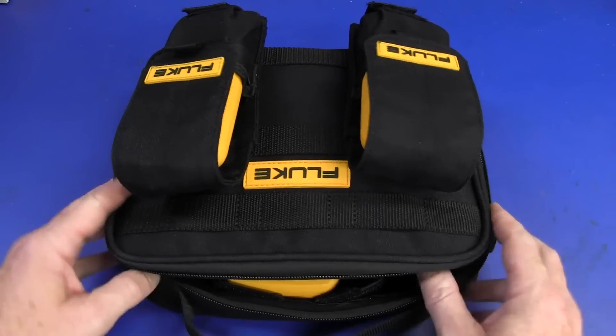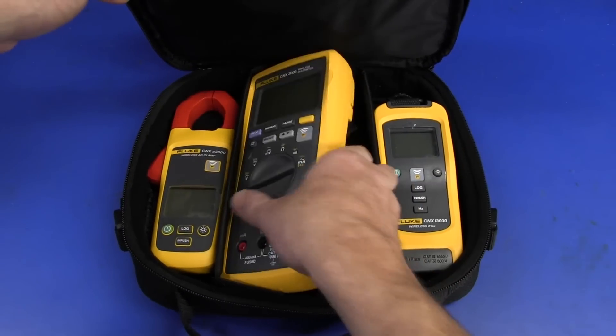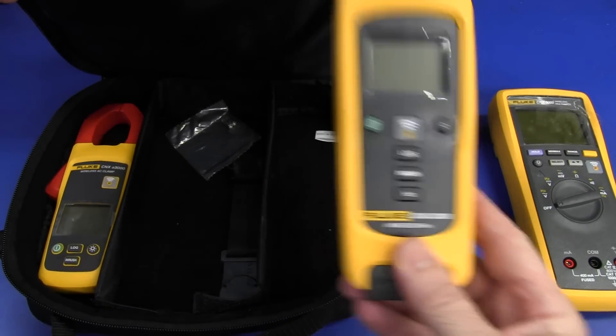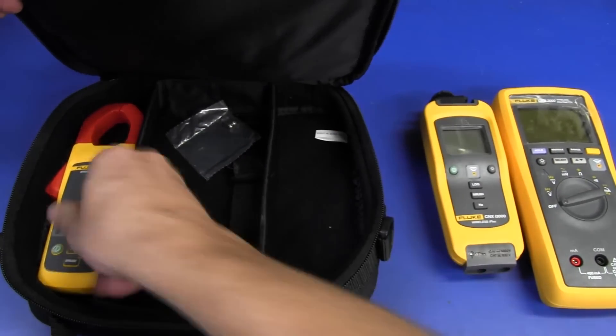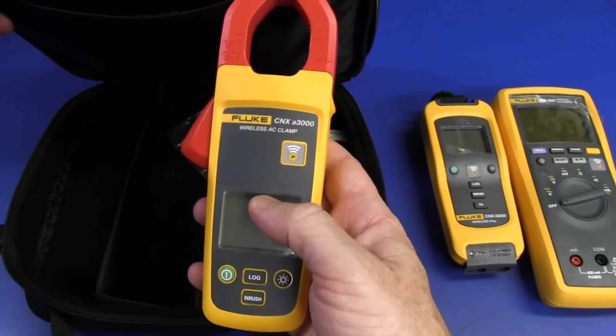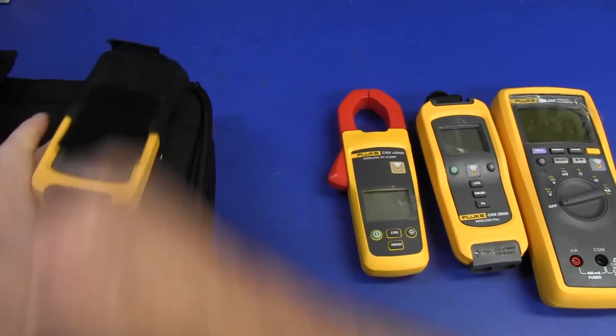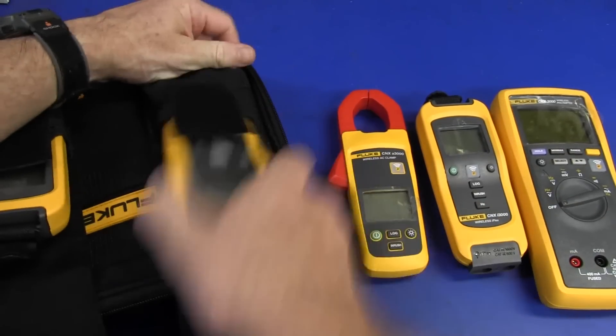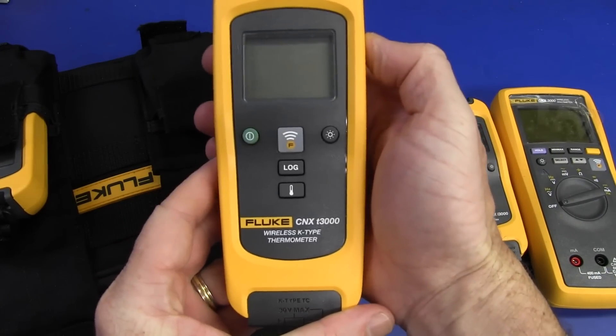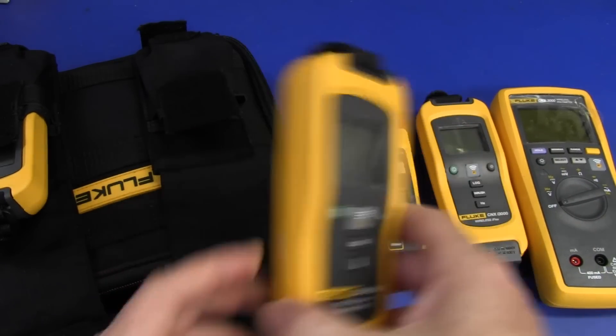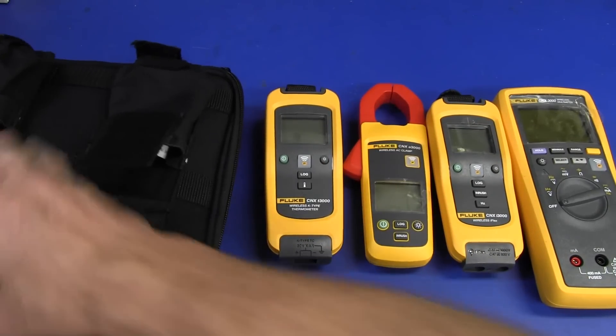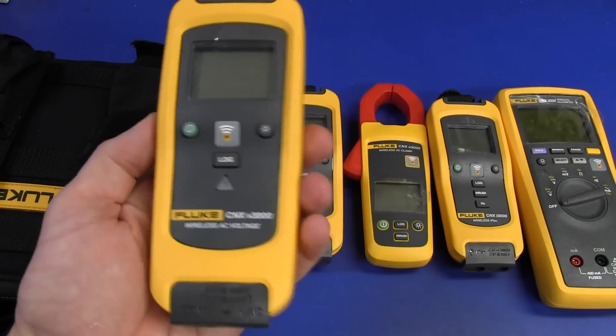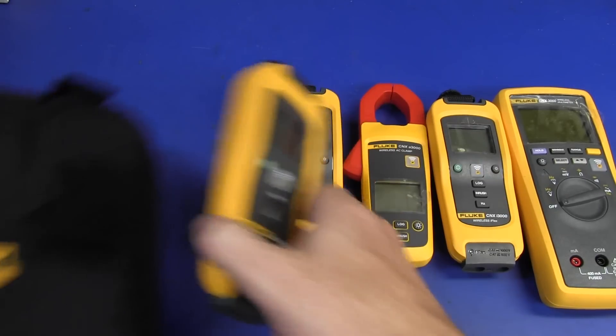Here it is in its nice little padded bag. We've got the Fluke CNX 3000 meter, the CNX i3000 wireless flex current clamp, the CNX A3000 wireless AC clamp, and they keep calling them the 3000. We've got the CNX T3000, which is a K-type thermocouple temperature wireless adapter, and the CNX V3000 which is a wireless AC voltage adapter. That's all it does, it just measures AC voltage.